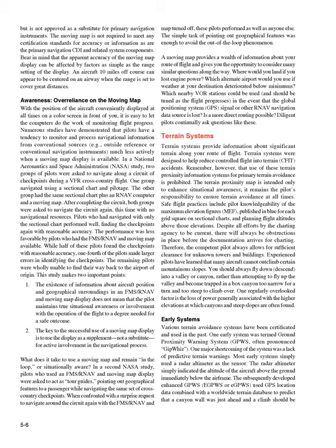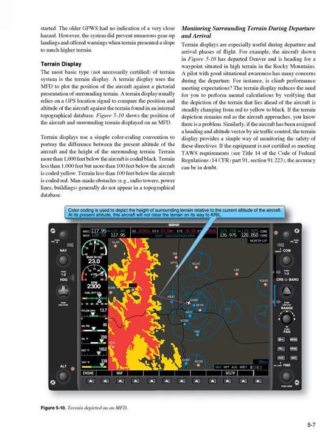Early systems: various terrain avoidance systems have been certificated and used in the past. One early system was the Ground Proximity Warning System, GPWS. One major shortcoming of the system was a lack of predictive terrain warnings. Most early systems simply used a radar altimeter as the sensor, which indicated the altitude of the aircraft above the ground immediately below the airframe. The subsequently developed enhanced GPWS, EGPWS, used GPS location data combined with a worldwide terrain database to predict that a canyon wall was just ahead and a climb should be started. The older GPWS had no indication of a very close hazard. However, the system did prevent numerous gear-up landings and offered warnings when terrain presented a slope to much higher terrain.